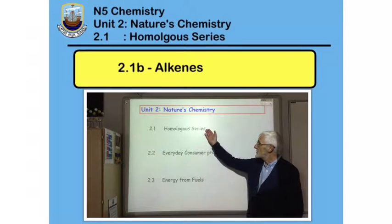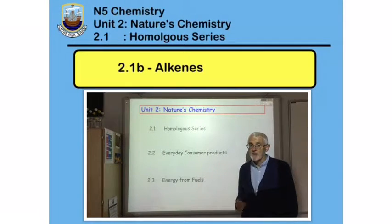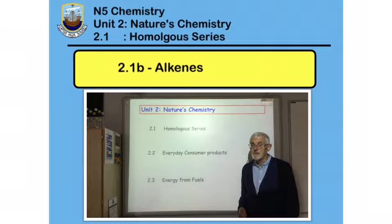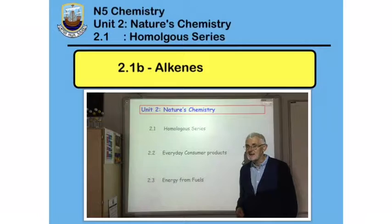In the first video in this section 2.1, we looked at two homologous series: alkanes and cycloalkanes. In this video we're going to look at a third homologous series of hydrocarbons, the alkenes.